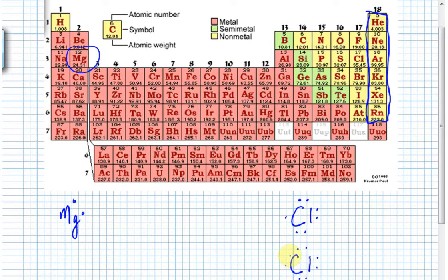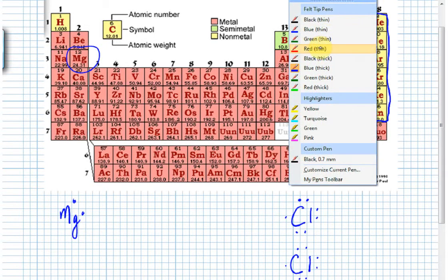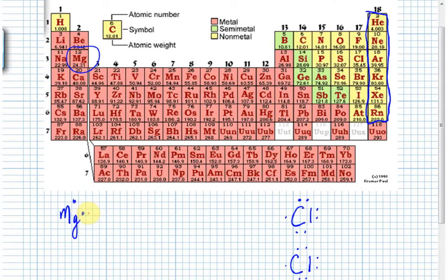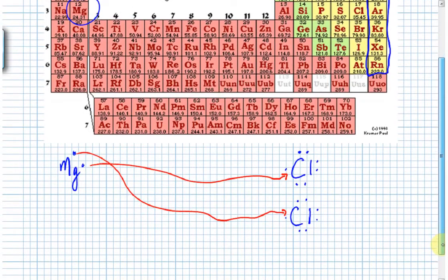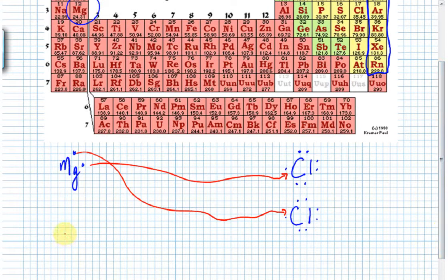We imagine that there's another chlorine close by. Magnesium looks at the world and says, aha, this is a perfect situation. Magnesium now comes along and says, sure, I will take my two valence electrons and I'll give one to this chlorine and give one to this chlorine.